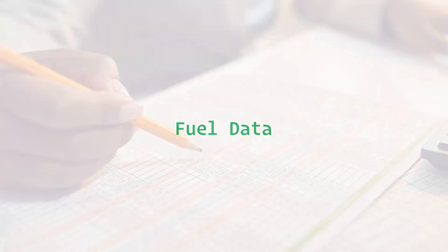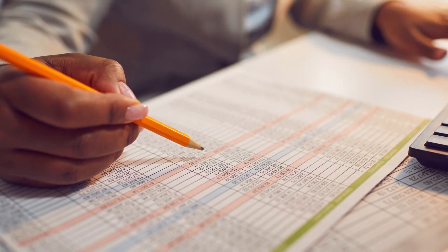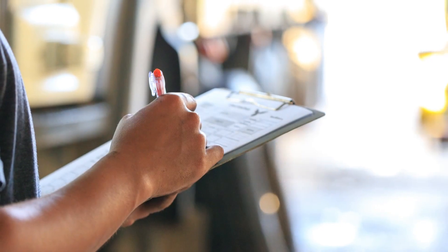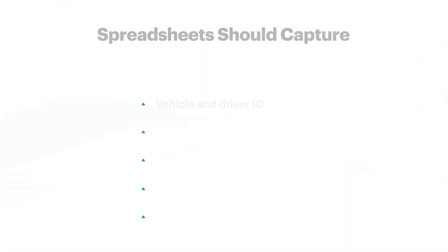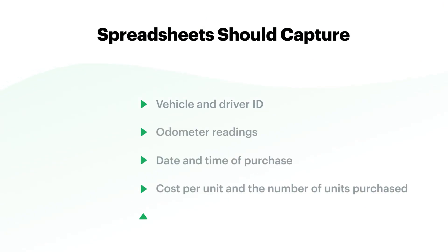So where do you find fuel data? For fleets who are still taking an analog approach to fleet management, there's a lot to be found in daily manual recordings. Ideally, your spreadsheets should capture all kinds of vehicle data like vehicle and driver ID, odometer readings, the date and time of purchase, the cost per unit and the number of units purchased, and location and vendor.